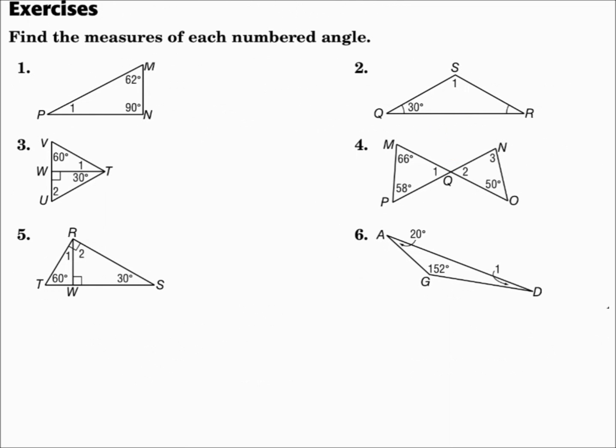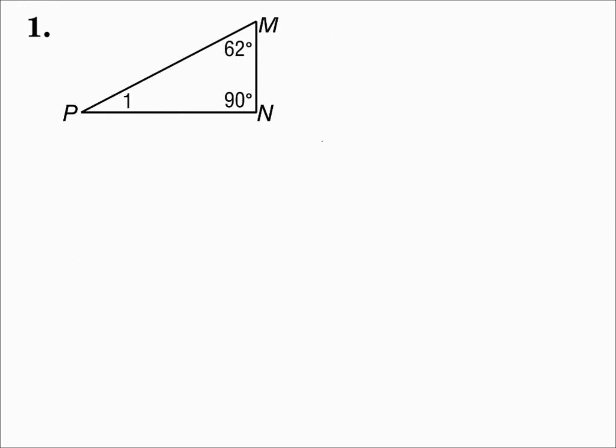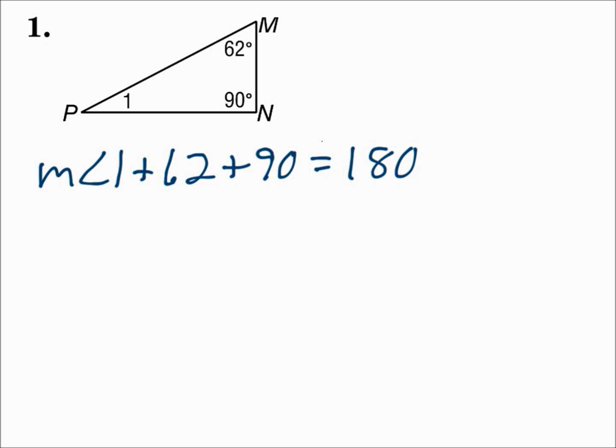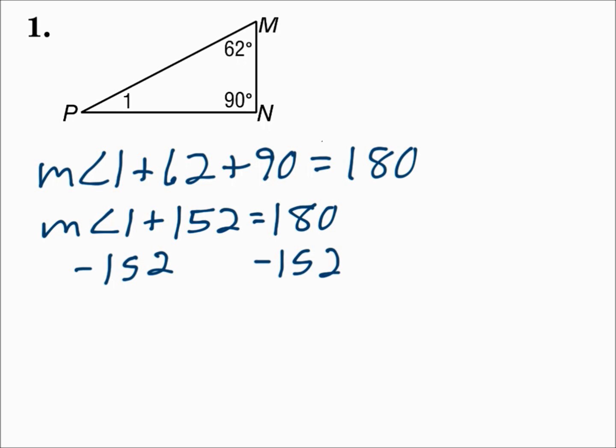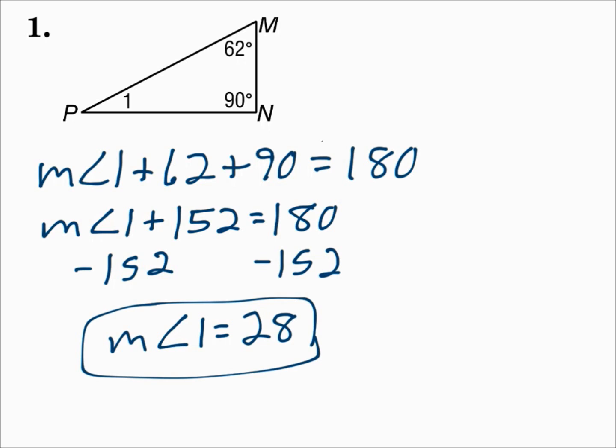Find the measures of each numbered angle. For number one, you have a triangle where you know two of the angle measures and need to find angle one. Using the triangle angle sum theorem, 62 + 90 + angle one = 180. That gives 152 + angle one = 180, so the measure of angle one is 28.